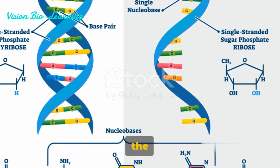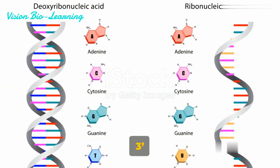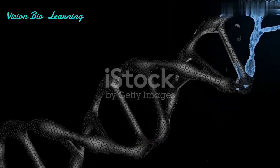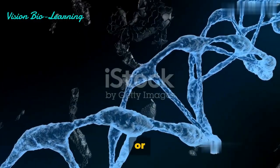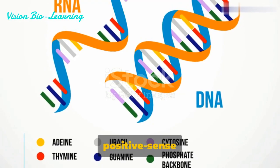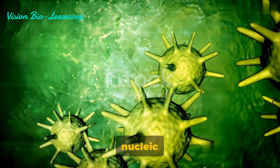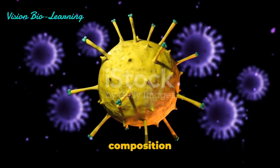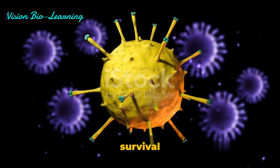Negative sense RNA, on the other hand, is a bit more complicated. Its structure is reversed, running from 3' to 5', which means it can't be directly translated into proteins. It's more like having a recipe in a foreign language. Before the virus can start replicating, this RNA needs to be transcribed into positive sense RNA. So, while the viral genome may seem like a simple string of nucleic acids, it's actually a complex and finely tuned machine. Its structure and composition dictate not only the virus's capabilities, but also its strategy for survival and replication.